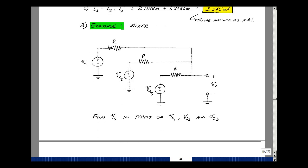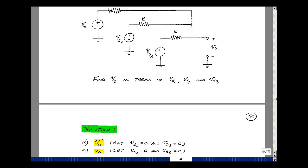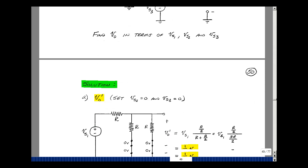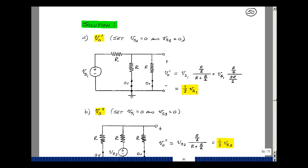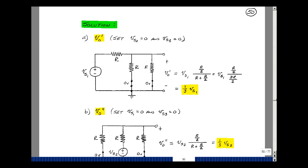Because I have multiple sources here, let's set all the sources equal to 0 but 1, and then find the voltage at the output due to each source acting alone. Let's set 2 and 3 equal to 0. I have a voltage divider. These two are in parallel, so that's going to be R over 2, voltage divided with R, times Vs1. So that's Vout due to the first source.